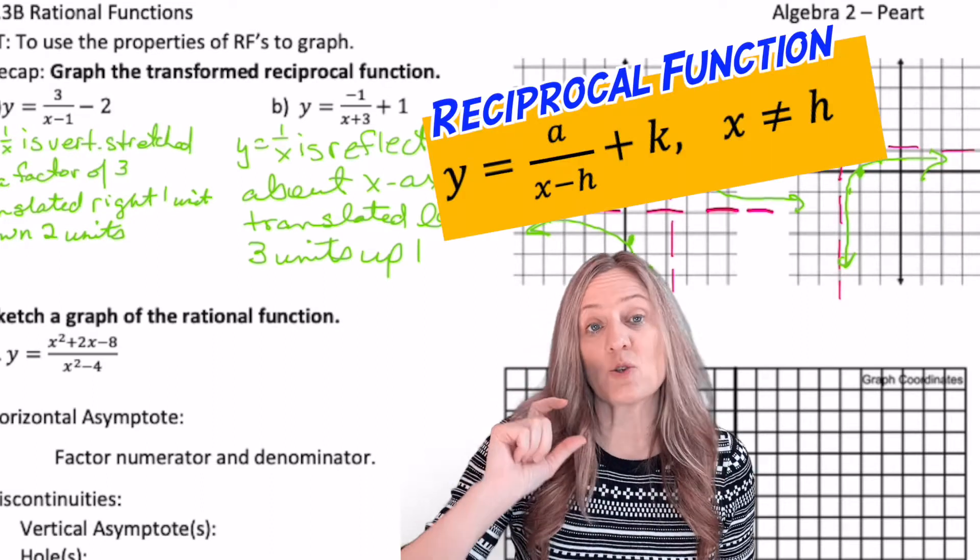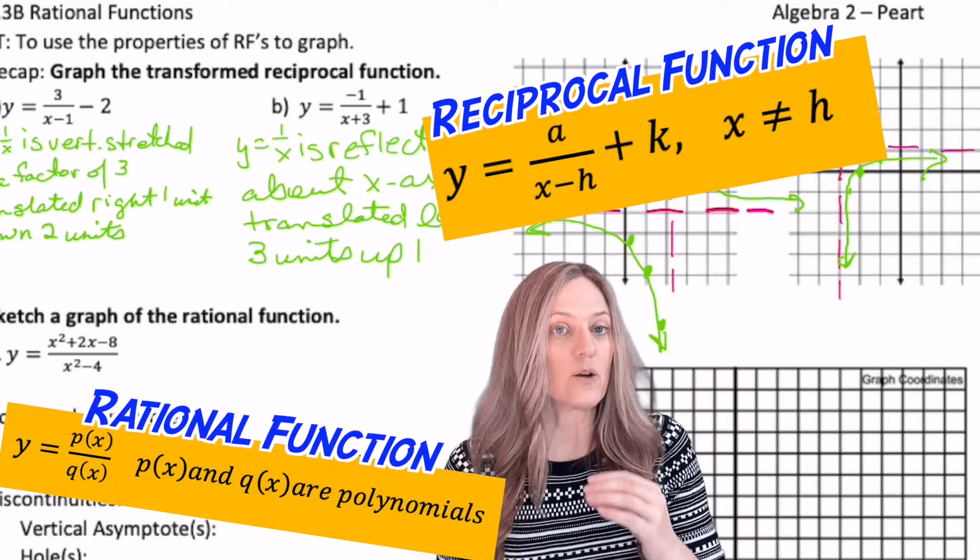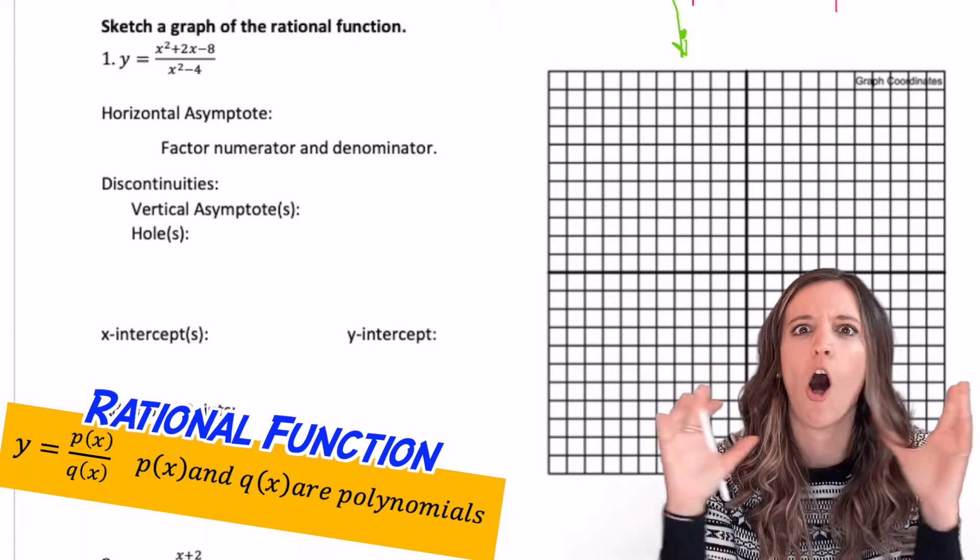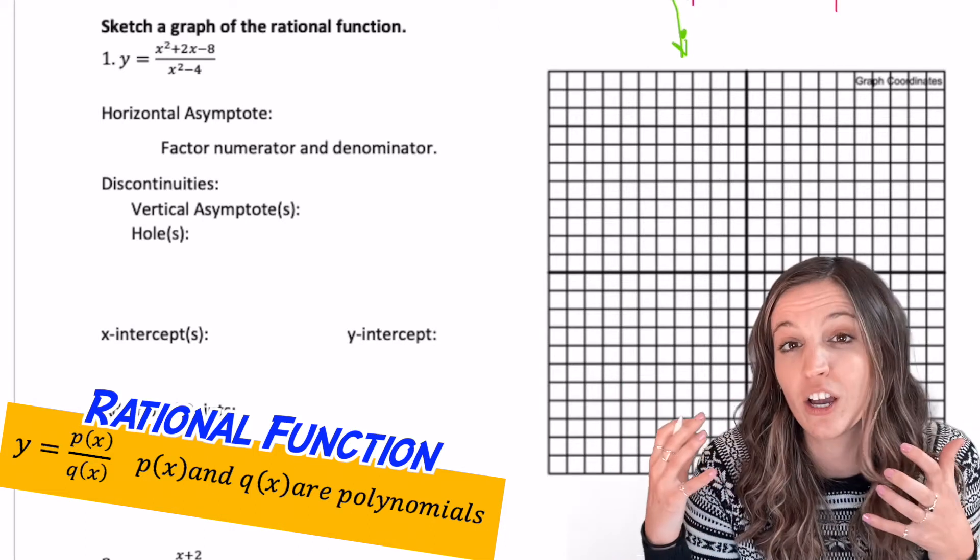The examples are here because we want you to recognize the difference between the transformed reciprocal function and graphing rational functions. Let's pull all we know about rational functions together so we can start sketching graphs.